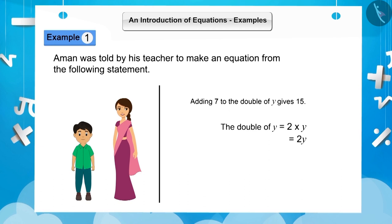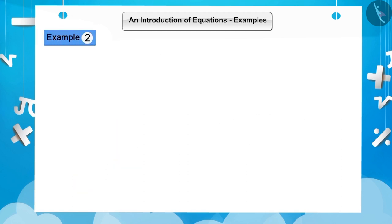...will be framed as follows: double of y plus 7 is equal to 15. So 2y plus 7 is equal to 15. LHS in this equation is 2y plus 7 and RHS is 15. Let's have a look at another example.